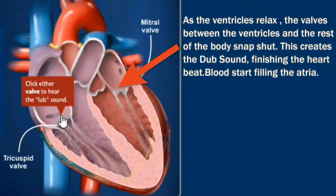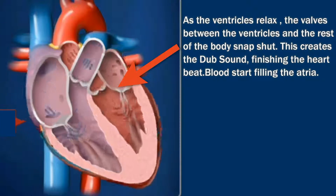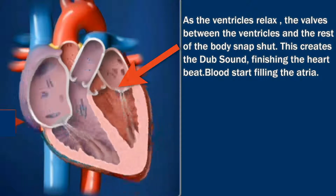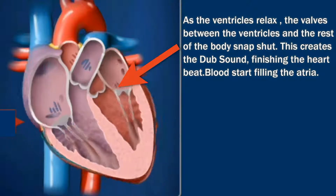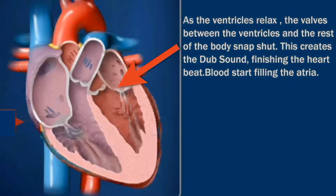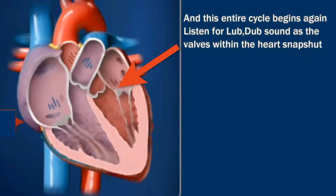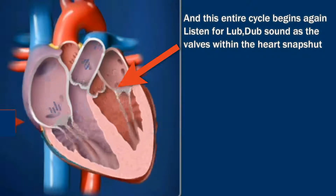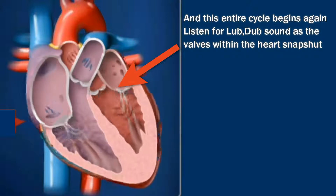Let's click the valve to hear the lub sound. The process repeats — as the ventricles relax, the valves between the ventricles and the rest of the body snap shut. This creates the 'dub' sound, finishing the heartbeat. Blood starts filling the atria and the entire cycle begins again. Listen for the lub-dub, lub-dub, lub-dub sounds as the valves within the heart snap shut.